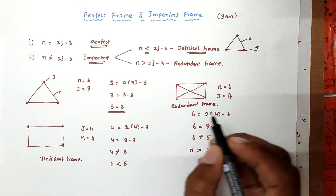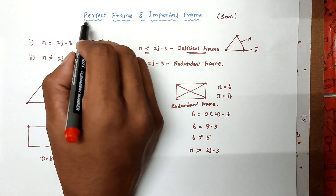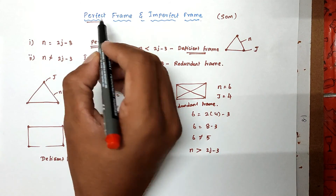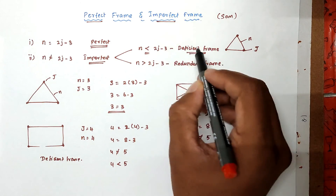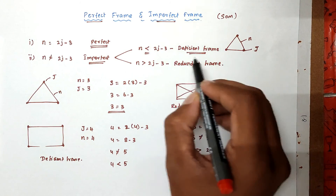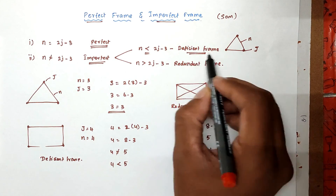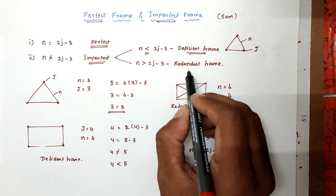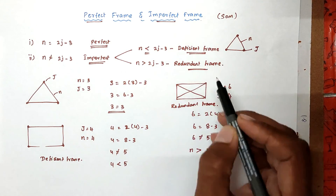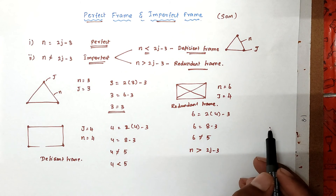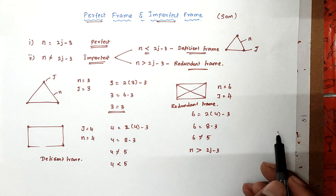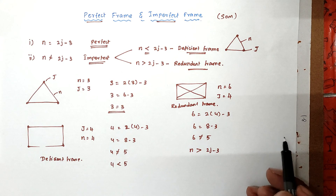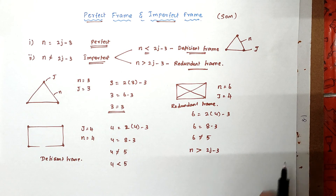So this is the method to find out whether a frame is perfect or imperfect. In imperfect frames, there are two types: deficient frame and redundant frame. We will see more in the next video. Thank you.